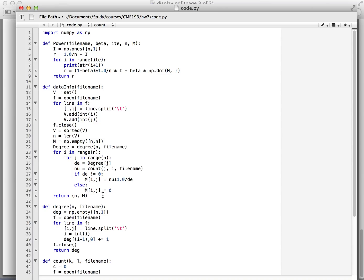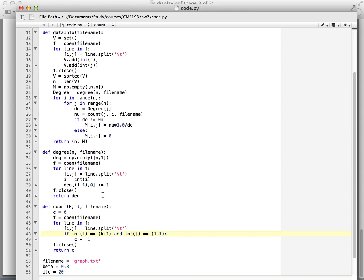We define the function to calculate the degree of nodes. In the degree function, we read the file and calculate the out-degree of vertices. We plus 1 to the degree of vertex i if there is an edge from i. Since the vertices are denoted from 1, we need to minus 1 from the vertex number to get the correct position in the array.